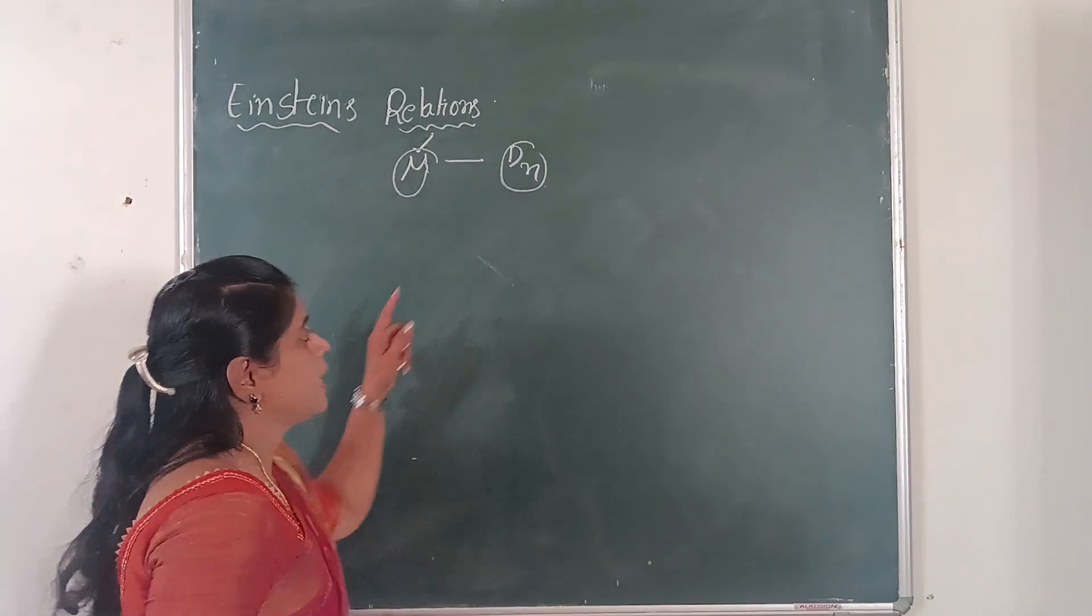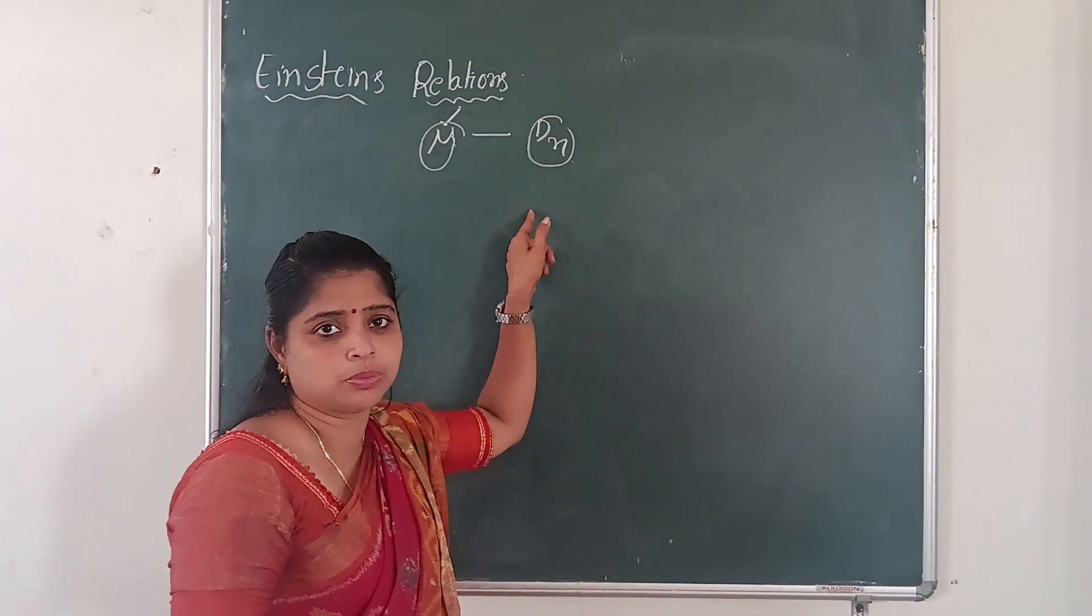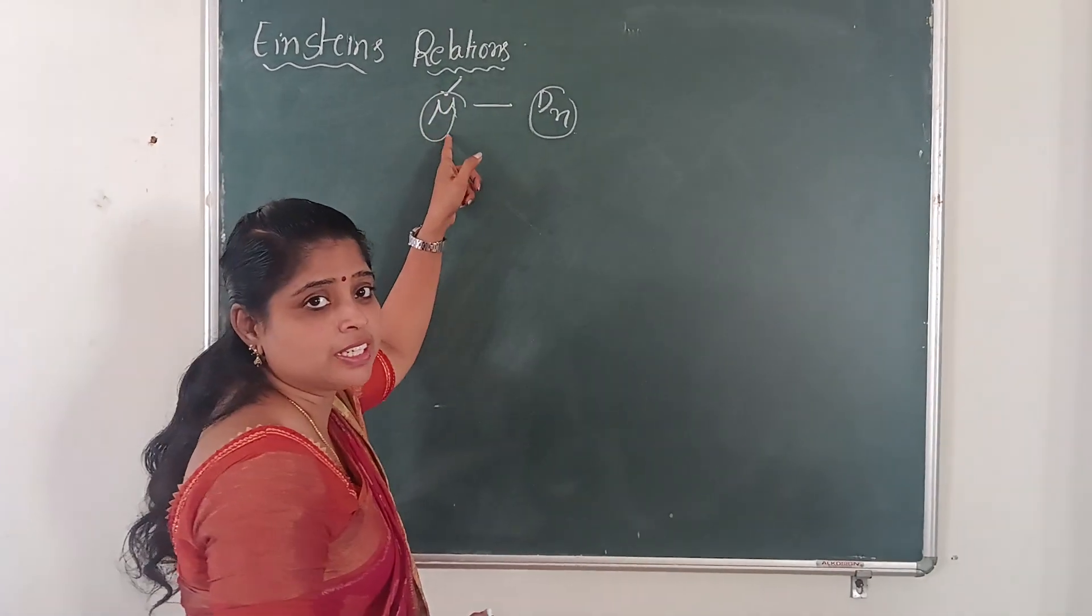So here, at equilibrium condition, due to excess charge carriers, the drift and diffusion both are equal. So then we will get Einstein's relations.